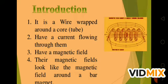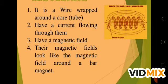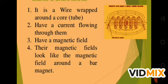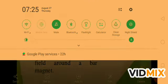So what is a solenoid? It is a wire which is wrapped around a core or a tube, and when the current flows through it, it creates a magnetic field. The magnetic field looks like the magnetic field around a bar magnet — it has similar properties. The same field lines and magnetic effect is created in this solenoid when current flows, and when you switch off the current, the magnetic field disappears.